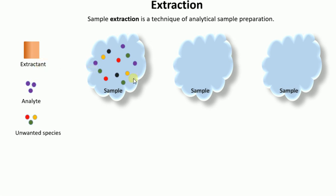Let me walk you through the features of sample extraction with three examples. In the first example, say you have a sample with many different chemical species but you want to analyze only one or very few of them. A real-life example would be analysis of sugar in a blood sample or benzene in car exhaust.